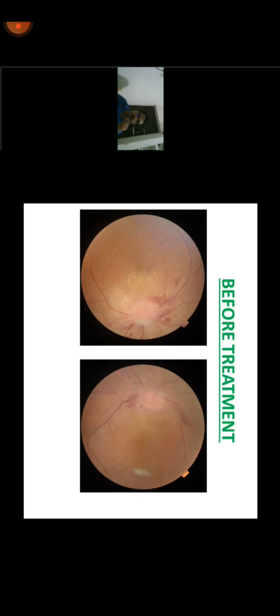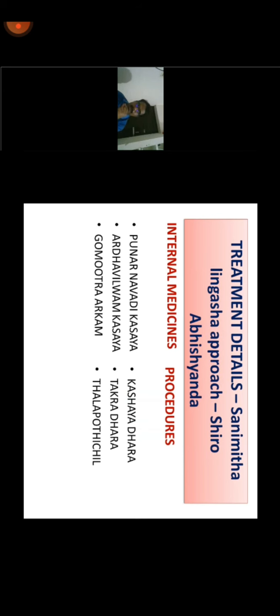In the other eye, comparatively less papilledema but with splinter hemorrhages. The arteries are very narrow and veins broadened — indicating arteriospasm and systemic hypertension. If this patient comes to us, how do we approach? We obtained from the history that the condition was mainly due to several severe head traumas. We calculated that the condition may be due to shirovishyanda, so if shirovishyanda is involved in the pathology, then the comparable visible disease is animitha linga nasha.